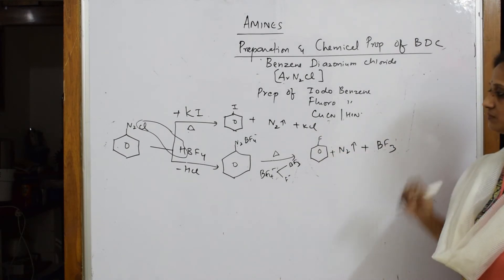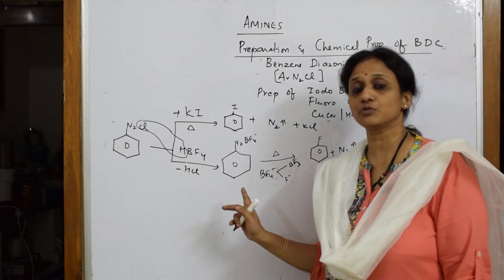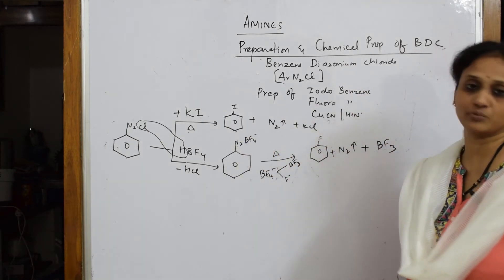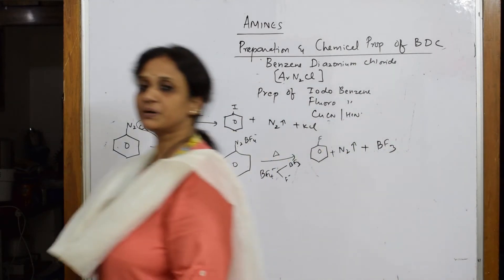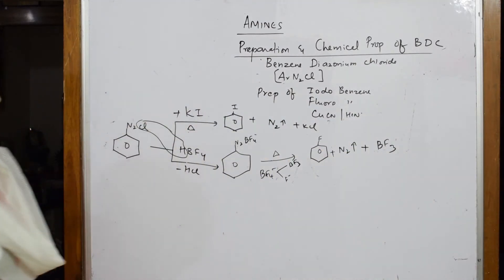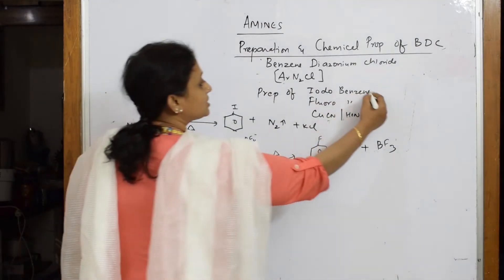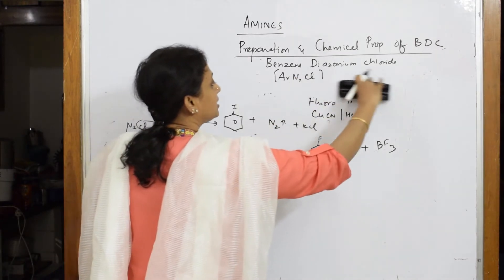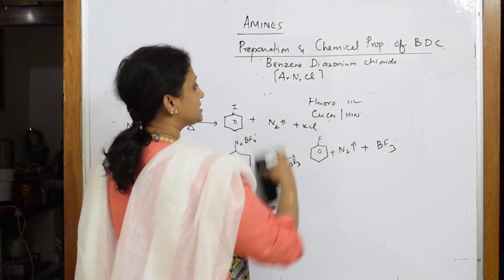Fluorobenzene plus your boron trifluoride is out. This is how you are going to prepare fluorobenzene. So, this is your iodobenzene. This is your fluorobenzene. Simple, isn't it? I have prepared from BDC using both reagents. Now, I am done with this.